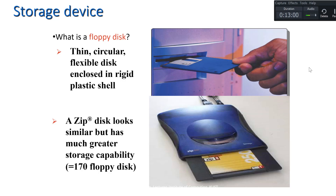Other types of storage devices include floppy disks — thin, circular, flexible disks enclosed in a rigid plastic sheet — and zip disks, which have much greater storage capacity, equivalent to about 170 floppy disks. However, these are rarely used nowadays. CD drives are also rarely used today, so you just need to have basic information about them.